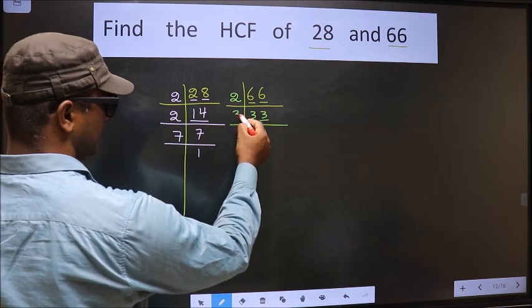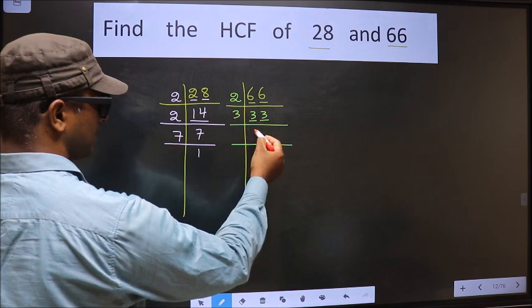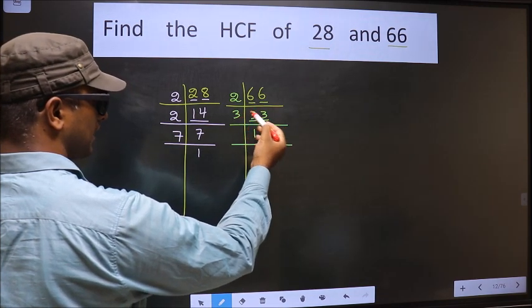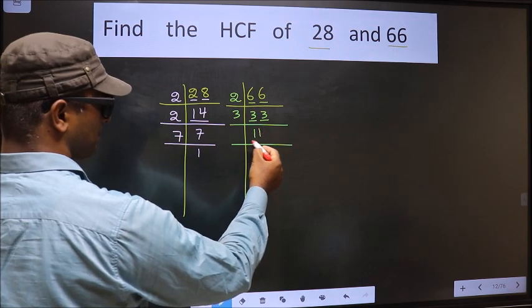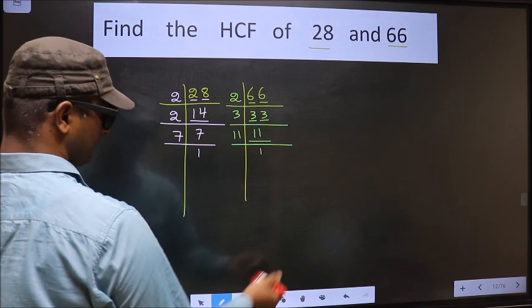So we take 3 here. The first number is 3. When do we get 3 in the 3 table? 3 times 1 is 3. The other number is 3. When do we get 3 in the 3 table? 3 times 1 is 3. Now here we have 11. 11 is a prime number, so we take 11 times 1 is 11.